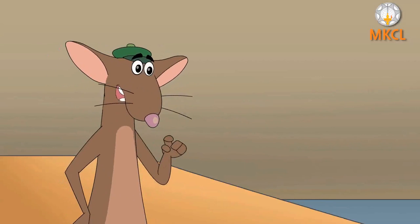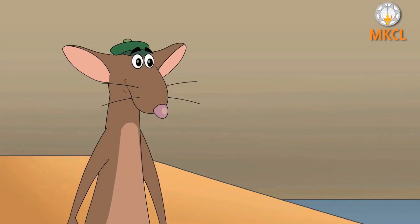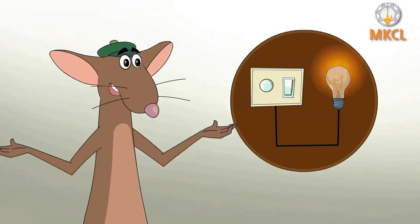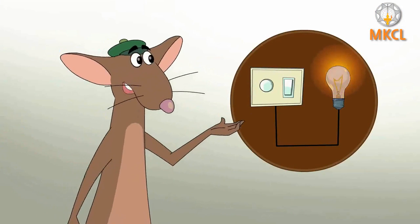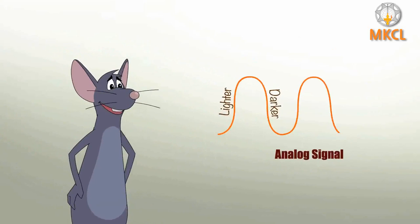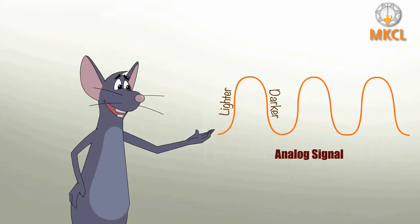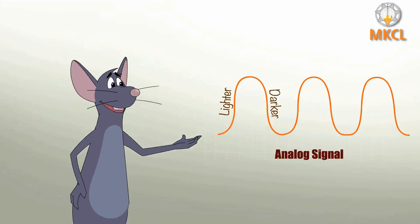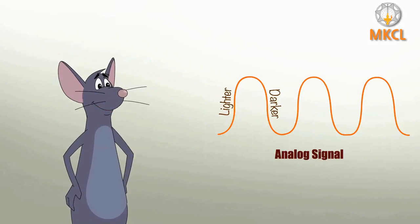Analog signals are a continuous flow of electricity. For example, take this light bulb. If I keep playing with the dimmer, it is a continuous increase and decrease in the light of the bulb. So that's why analog signals are shown in waveform — where if this is light and this is dark, then these are infinite small changes to the intensity of light.